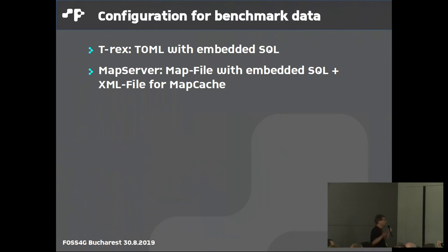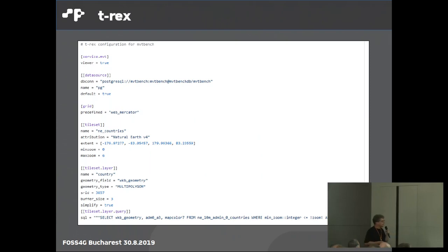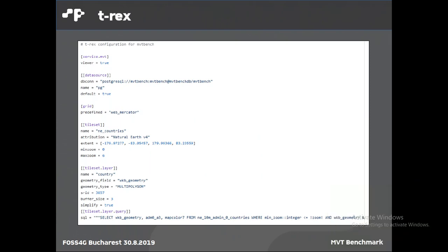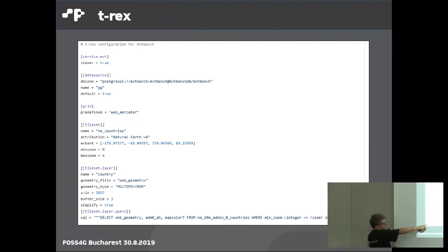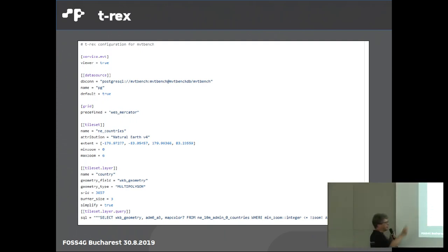I must confess I'm the author of T-Rex, so the first motivation to build this benchmark was to benchmark T-Rex itself — to make it faster and measure how fast it is. T-Rex is configured with a TOML text file, similar to an INI file. It has a data source, a grid, and then you define the tileset. You can write SQL for a fine-tuned query for each layer, and you can define buffer size, simplification, SRID, and so on.